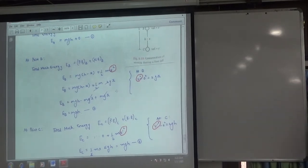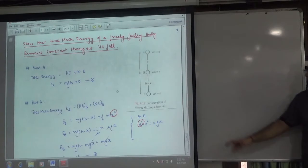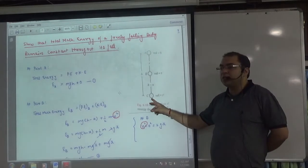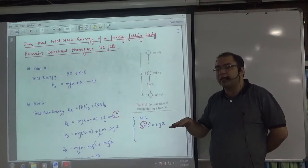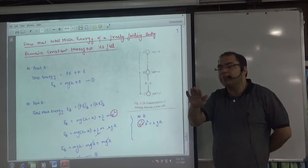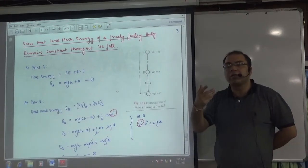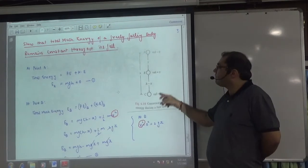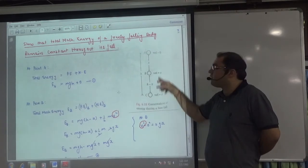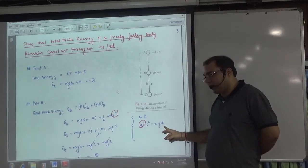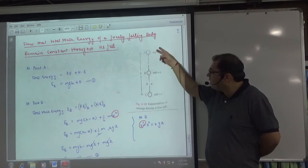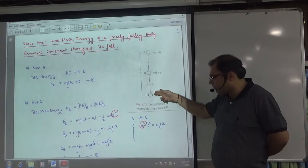Next is at point C. Total energy is sum of potential. What will be here? Zero. Kinetic will be equal to half mv' square. So v' value will be here from here. v' square minus 0 square is equal to 2gh.